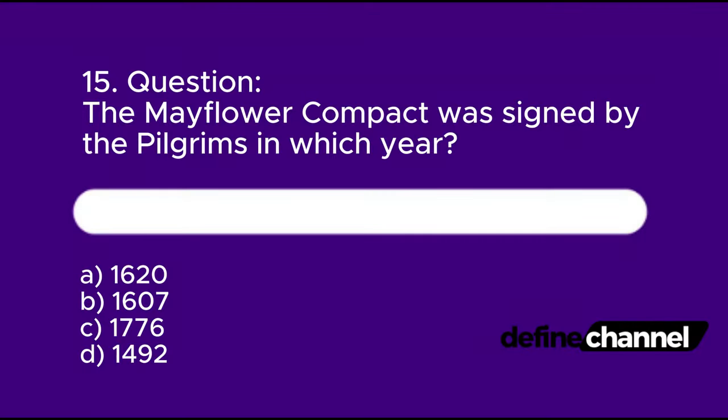Question 15: The Mayflower Compact was signed by the Pilgrims in which year? A. 1620, B. 1607, C. 1776, D. 1492. Please determine which is the correct answer.